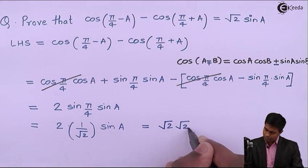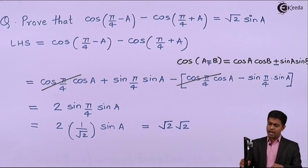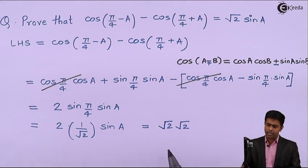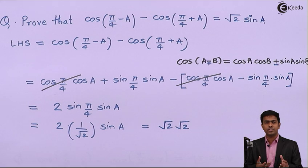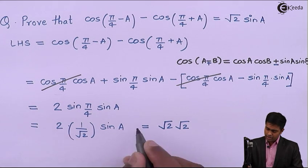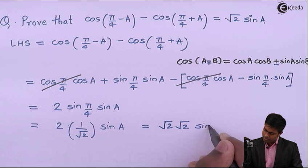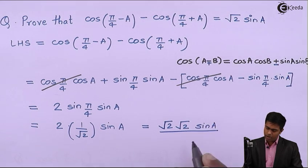Now we will rearrange the terms. I'll write this 2 as √2 multiplied by √2, because we know that √2 × √2 is nothing but (√2)², which is 2, multiplied by sin A.